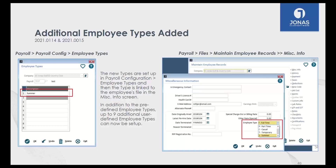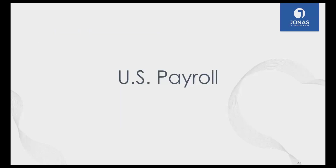The other payroll enhancement is employee types. Previously we provided a few pre-loaded employee types such as full-time, part-time, casual, and temporary. Now we've given you the ability to create your own employee types — up to nine of them. For example, you might create 'Summer Employees,' but it's completely up to you.